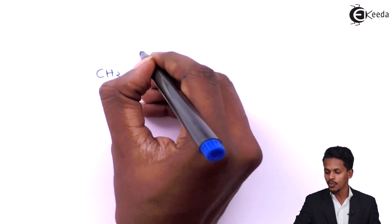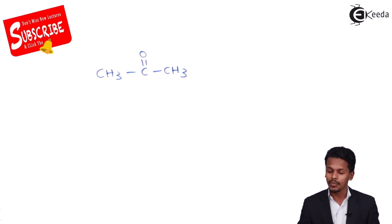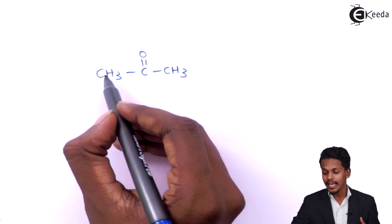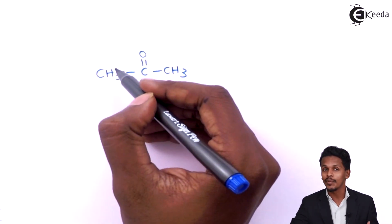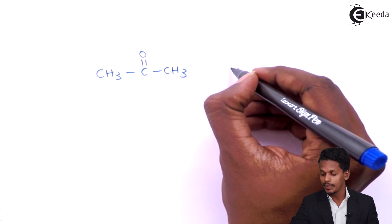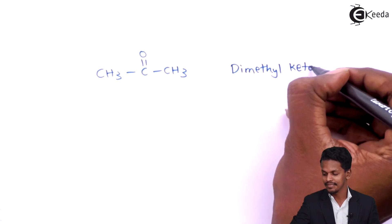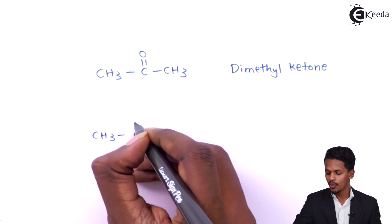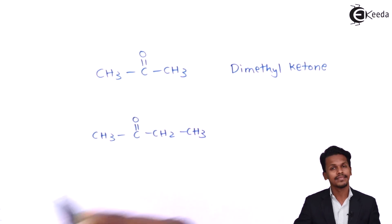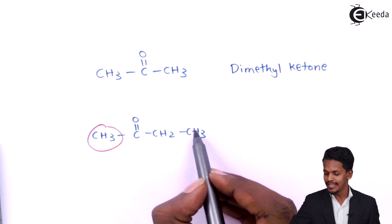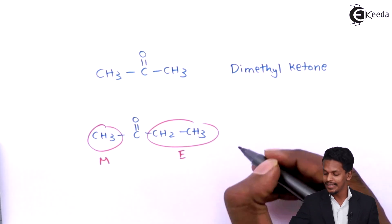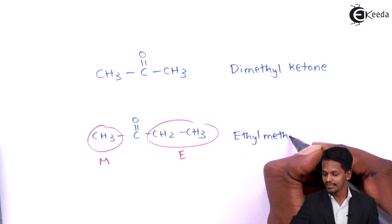For example, if we have CH3-C(=O)-CH3, the alkyl groups attached to the carbonyl group are both methyl. So the common name is dimethyl ketone. For CH3-C(=O)-CH2-CH3, this is a methyl group and an ethyl group. Alphabetically, E comes before M, so the common name is ethyl methyl ketone.